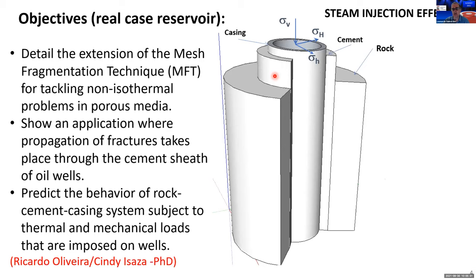The objective here is to analyze from the perspective of geomechanics, using the finite element mesh fragmentation technique, what happens in the well in the near field submitted to steam injection. I'm going to detail the extension of the mesh fragmentation technique for tackling non-isothermal problems in porous media and show applications of fracture propagation — specifically predicting the behavior of the rock-cement-casing system subject to thermal and mechanical loads imposed on the wells.